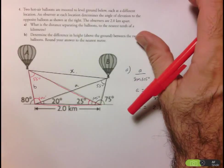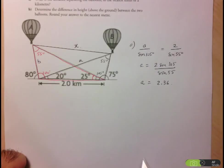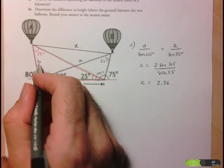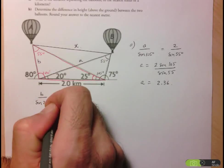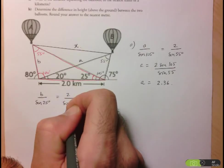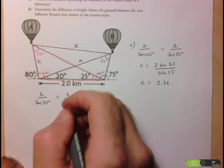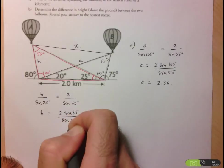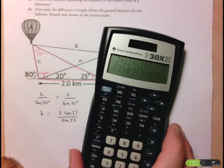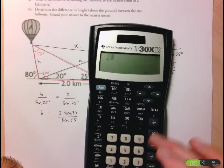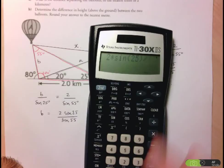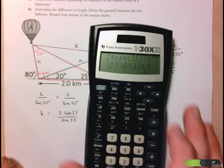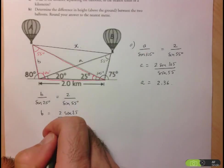So enough information to solve for this side length B. Let's go ahead and do that. Set up an equation. So B over the sine of its opposite angle, which would be 25 degrees, is equal to 2 over the sine of its opposite angle, which would be 55. So B is equal to 2 sine 25 over sine of 55. And let's calculate that here. 2 times sine 25, close off the bracket, divided by sine of 55 equals 1.03. So B is equal to 1.03.